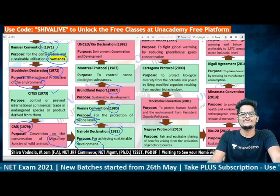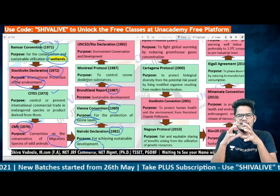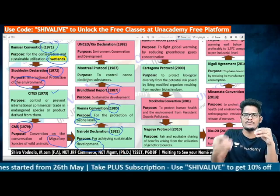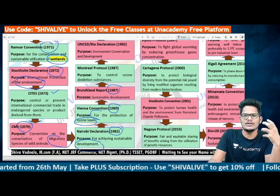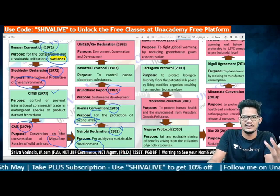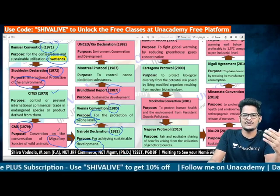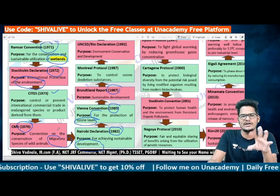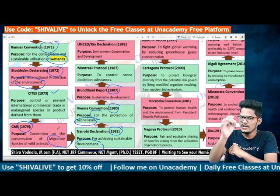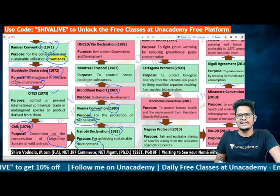Exactly two years later, in 1987, the Brundtland Report on sustainable development came into picture. This report defined sustainable development as meeting present needs without compromising the ability of future generations to meet their own needs — preserving resources for the future while fulfilling current requirements.